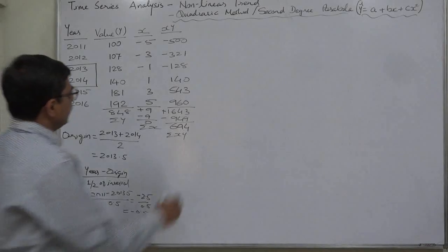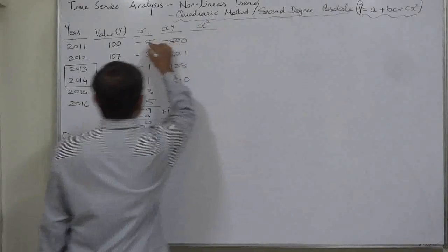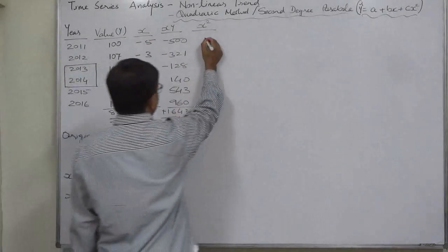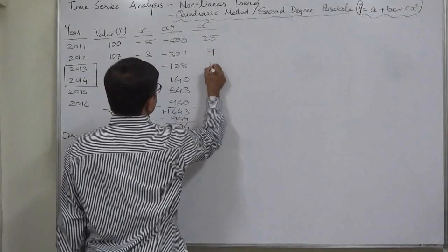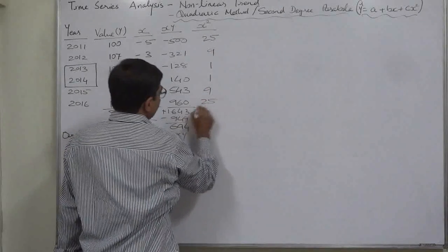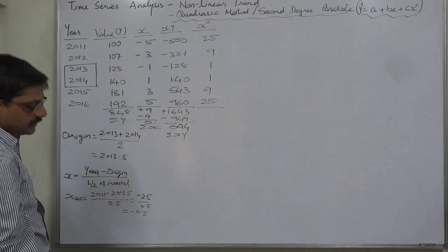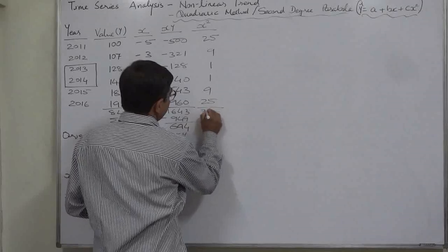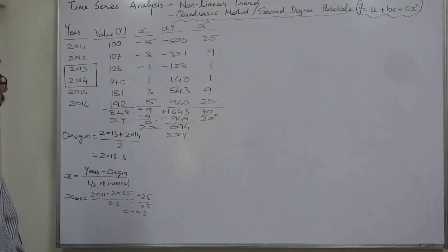Now we need X squared. Squaring the X values — 5²=25, 3²=9, 1²=1, 1²=1, 3²=9, 5²=25 — and summing: 25+9+1+1+9+25 = 70. So ΣX² = 70.